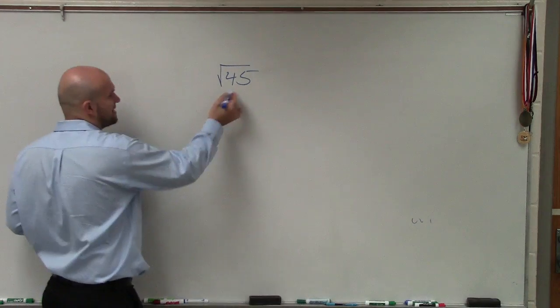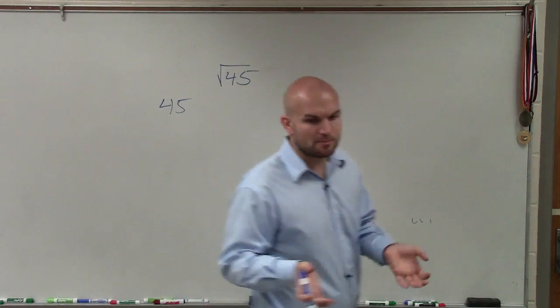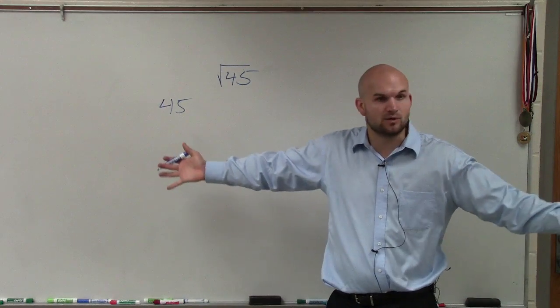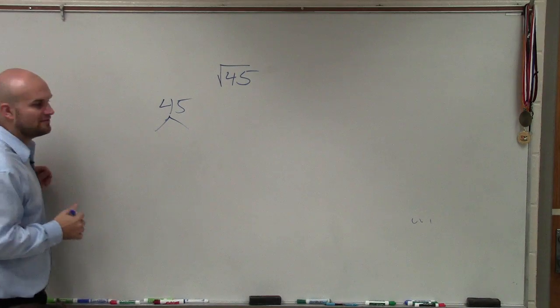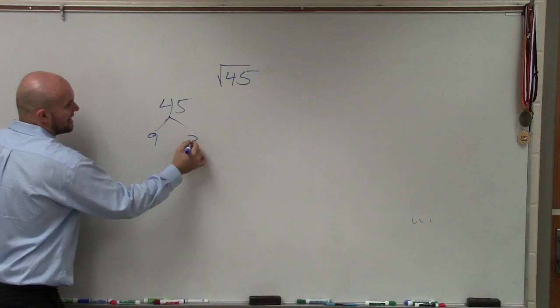If we're going to use prime factorization, we're rewriting our number as a list of its prime factors. How can we break this down? What can we factor this by? Immediately, I see it ends in a 5, so I know it's factorable by 5. So I could say 9 times 5.